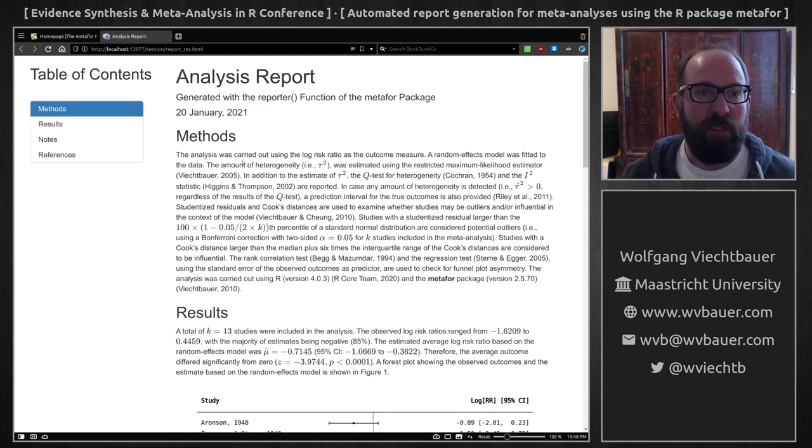So what does it tell me? Well it will tell me what kind of effect size estimate was used for this analysis: log risk ratios. A random effects model was fitted. How was tau squared estimated using restricted maximum likelihood estimation. Then it provides references for the Q test, for I squared. It describes how the data were checked for potential outliers or overly influential studies.